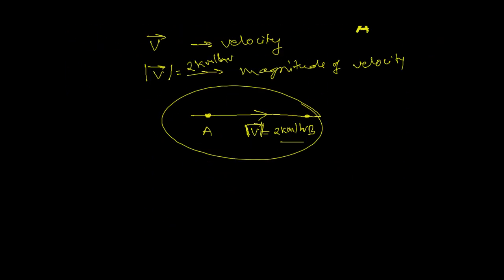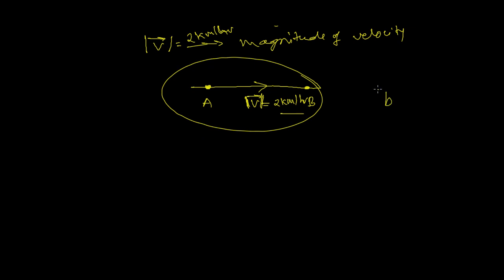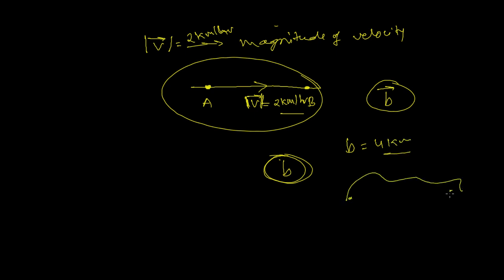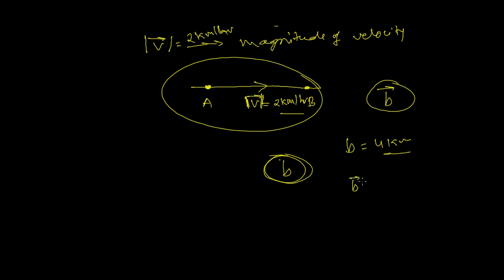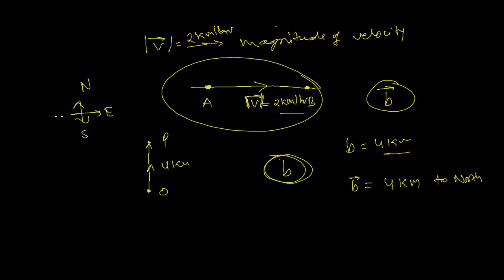So understand the representation of the vector: you need to give the arrowhead. Let's say this is B with an arrow — that represents vector B. If you simply write B without an arrow, that just represents the quantity's magnitude — say B equals 4 kilometers, it just represents a distance. But if you write vector V as 4 kilometers to the north, then it represents a direction from an initial point O to point P — 4 kilometers towards the north. This is how we represent vectors: by giving the arrow over the symbol.